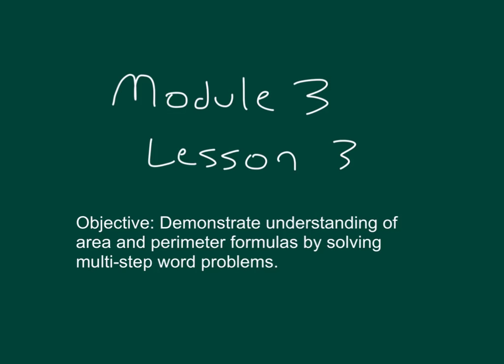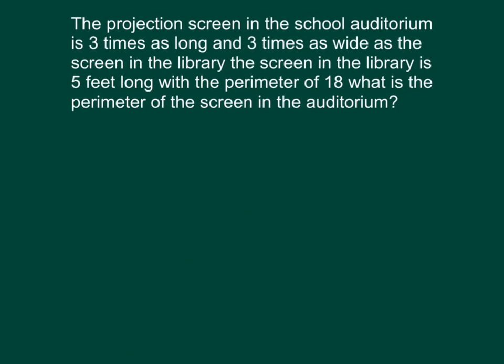The objective within this lesson is to demonstrate understanding of area and perimeter formulas by solving multi-step word problems. Here we have a multi-step word problem asking us about the perimeter of the screen within the auditorium.